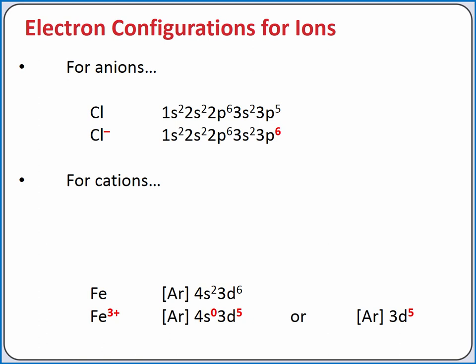chloride has a 1- charge, so we need to add one electron to the electron configuration for chlorine. Chlorine has 5 electrons in the 3p subshell,